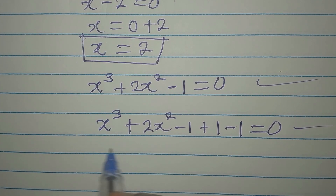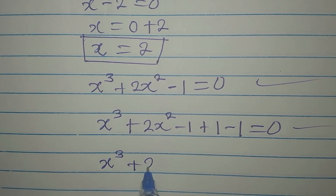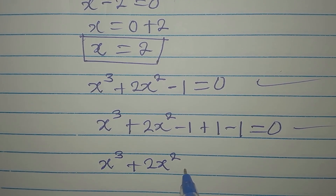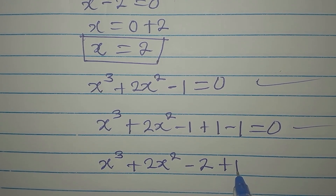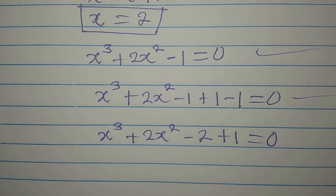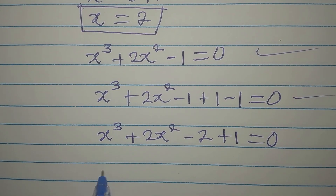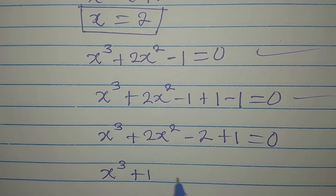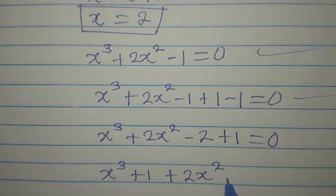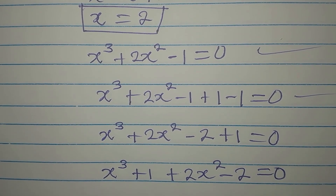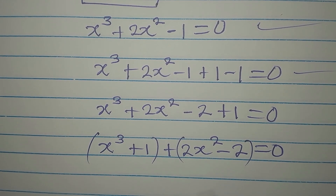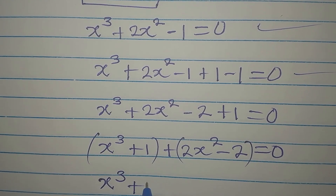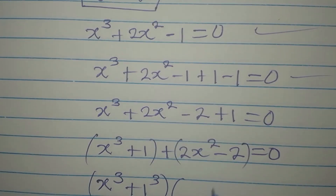Going ahead: x cubed plus 2x squared, then minus 1 minus 1 gives minus 2, and we still have plus 1, equals 0. Rearranging, we bring terms together to get x cubed plus 1, then plus 2x squared minus 2, equals 0. We can group and factorize these pairs.